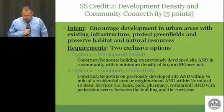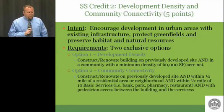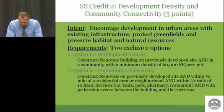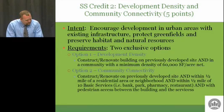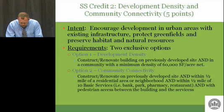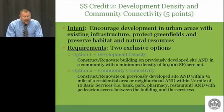Option two: community connectivity. Construct or renovate a building on a previously developed site and within a half mile of a residential area or neighborhood with an average density of 10 units per net acre, and — these are important ands — within a half mile of at least 10 basic services. Basic services include: bank, place of worship, convenience store, grocery, daycare center, cleaners, fire station, beauty salon, hardware, laundry, library, medical or dental office, senior care facility, park, pharmacy, post office, restaurant, school, supermarket, theater, community center, fitness center, museum — with pedestrian access between the building and these services.